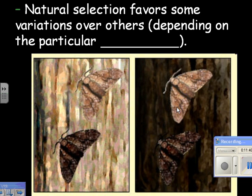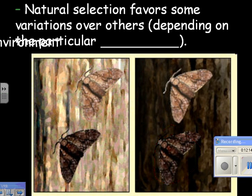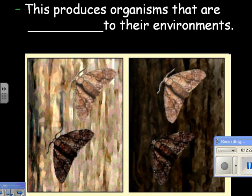The diversity in the genetics really depends on the environment. In this environment, this one's better; in this environment, that one's better. After the industrial revolution and they cleaned up the soot, the trees looked clean again, and the light-colored kind became more popular in the population. Natural selection favors some variations over others, and that really depends on that particular environment. This produces organisms that are best fit or better fit to their environments.